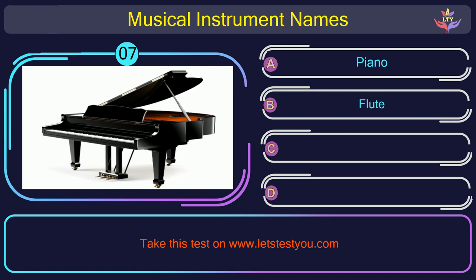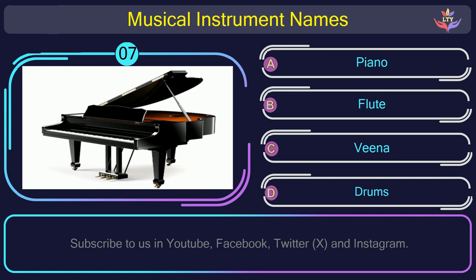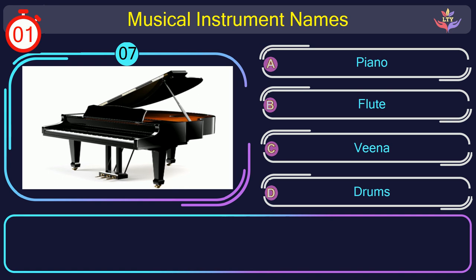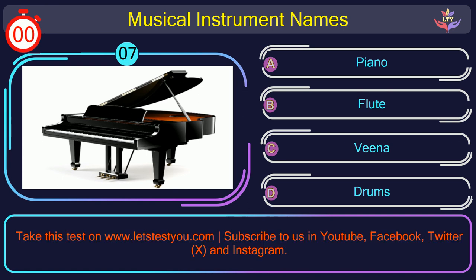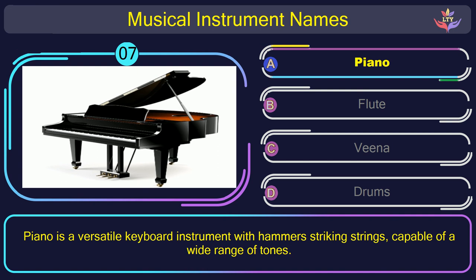Question number 7. Find the name of the musical instrument in this picture. The correct answer is option A: Piano. Piano is a versatile keyboard instrument with hammers striking strings, capable of a wide range of tones.